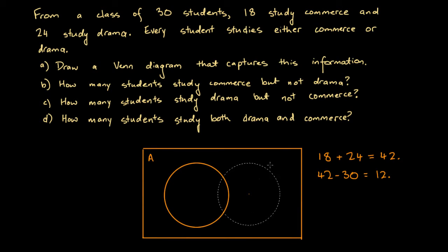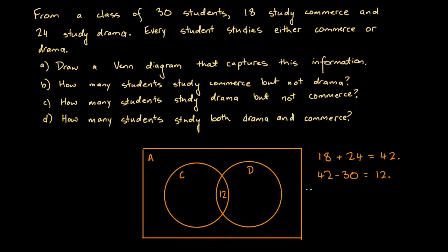So what we can do here is draw two overlapping regions. We'll call one region C — the students who study commerce — and this region D — the students who study drama. And in between, the overlapping region indicates the students who study both commerce and drama. We're going to put 12 students in there. Now, how many people are in the sample space A but not in the C or D region? It says that every student studies either commerce or drama, so a student in that outer section would be one who studies neither commerce nor drama. Because no students satisfy that criteria, we put zero there.